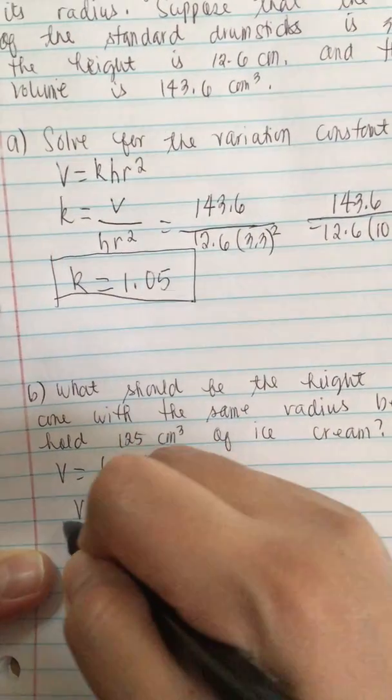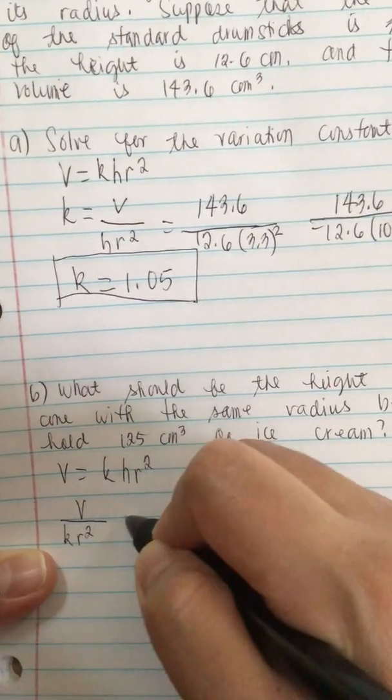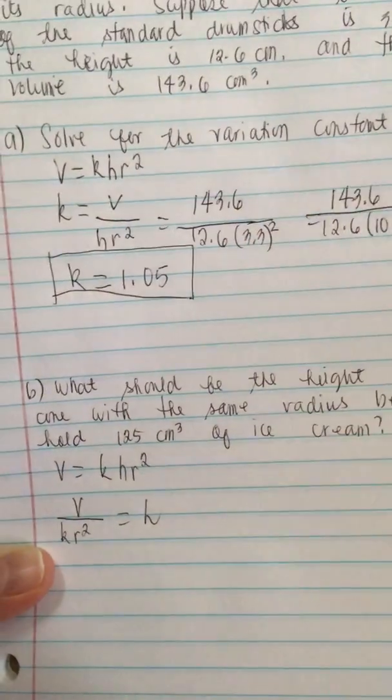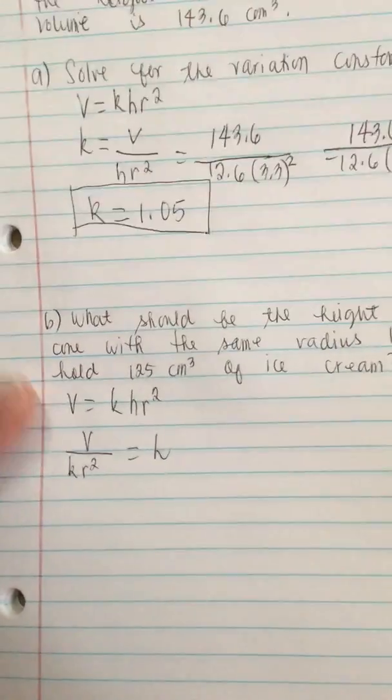So V over K times radius squared is equal to H. Now we plug in our numbers.